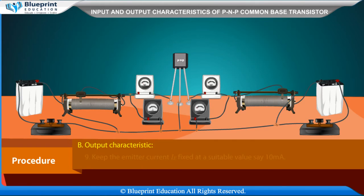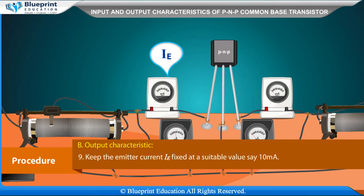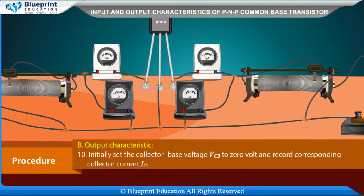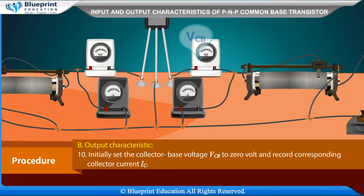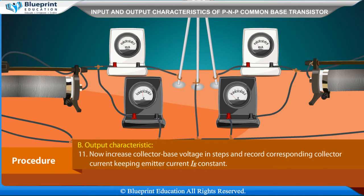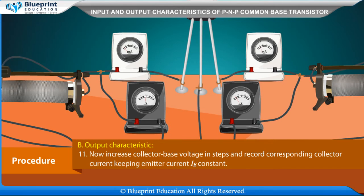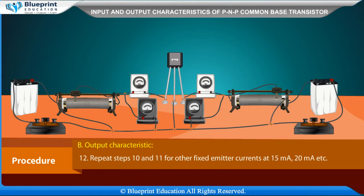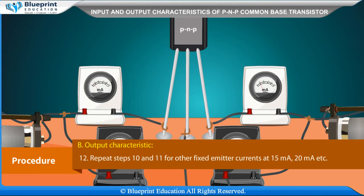Output Characteristics: Keep the emitter current IE fixed at a suitable value, say 10 mA. Initially set the collector-base voltage VCB to 0 V and record the corresponding collector current IC. Now increase the collector-base voltage in steps and record the corresponding collector current while keeping emitter current IE constant. Repeat for other fixed emitter currents such as 15 mA, 20 mA, etc.